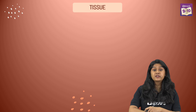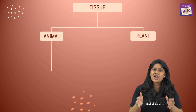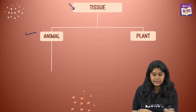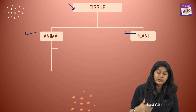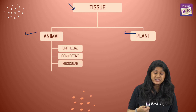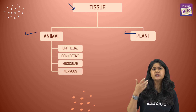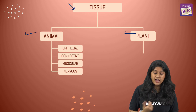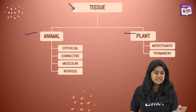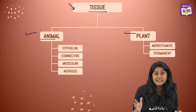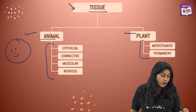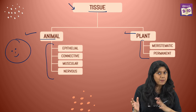Now let's talk about the different types of tissues we'll be studying in this chapter. We will broadly discuss the tissues of animals and plants. In animals we have four important types: epithelial tissue, connective tissue, muscular tissue, and nervous tissue. In plants we have two important types: meristematic tissue and permanent tissue. We'll go into the details of all of these, so don't worry.